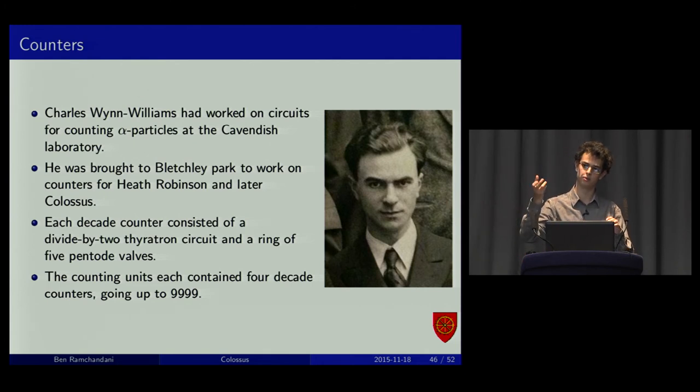You had to divide by two with a thyratron ring. So, you had a ring of two thyratrons. One spark, the other quench, and they'd switch on each count. You can then feed this into a ring of five. It was actually pentode valves, and these, that allows you to count up to 10 in total. Four of these together, you can count up to 10,000 very quickly.